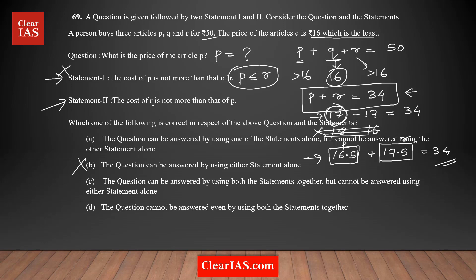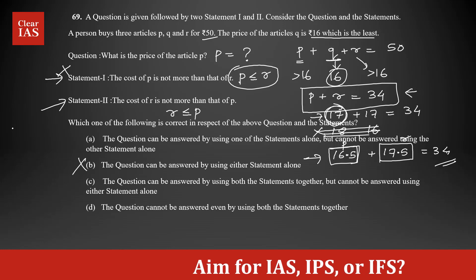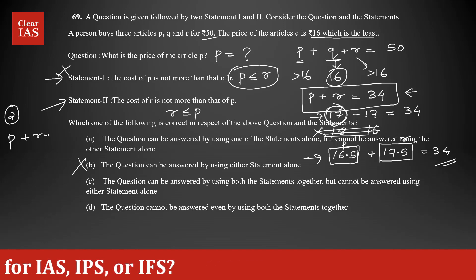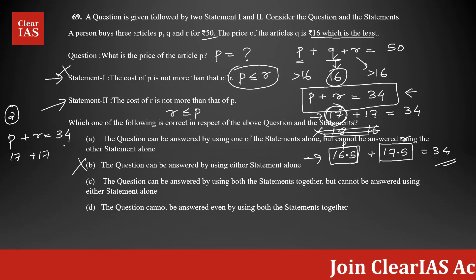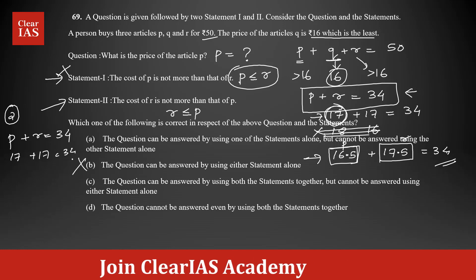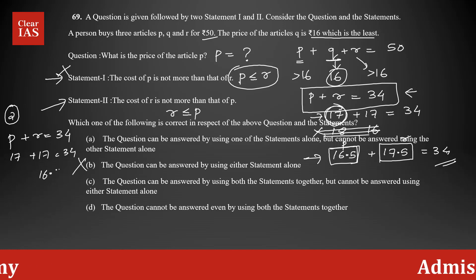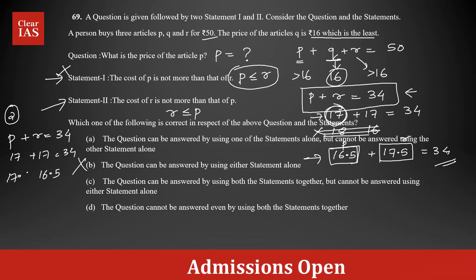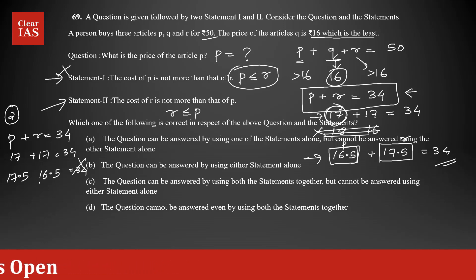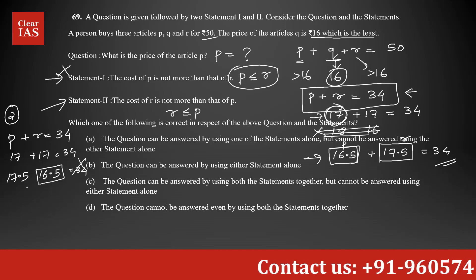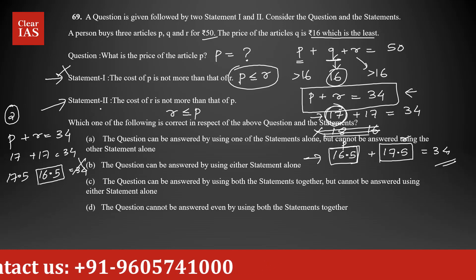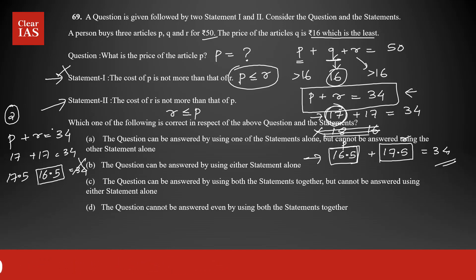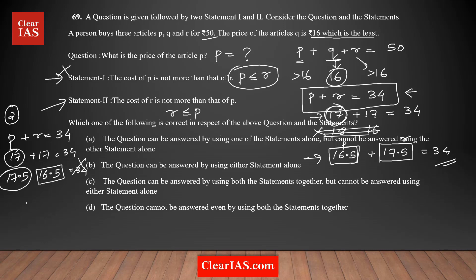Now I'm going to analyze statement 2 alone. What does statement 2 say? The cost of R is not more than that of P — meaning R is less than or equal to P. Thinking about possible combinations where P plus R equals 34: one combination is 17 plus 17, which satisfies R ≤ P. Another possibility is R equals 16.5 and P equals 17.5, which also gives 34 and satisfies R ≤ P. So statement 2 individually is also not sufficient — you get multiple answers for P (17 or 17.5). Statement 2 alone is not sufficient.